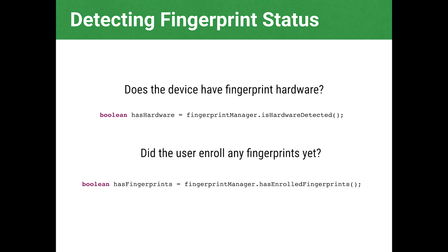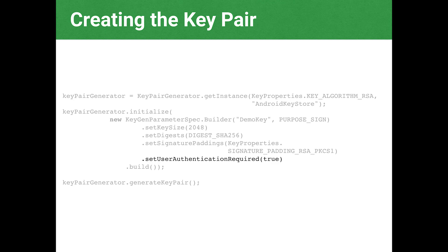The FingerprintManager lets you query the system to find out: do I have fingerprint hardware, can I use this at all? You can also query to find out if the user has a fingerprint enrolled on the phone, so you can decide whether to tell the user to go add one. And when you create your key pair, there's a parameter you can set called authentication required, which will create the key in such a manner that it's locked down by the fingerprint reader — that's how you create a key gated by the fingerprint.